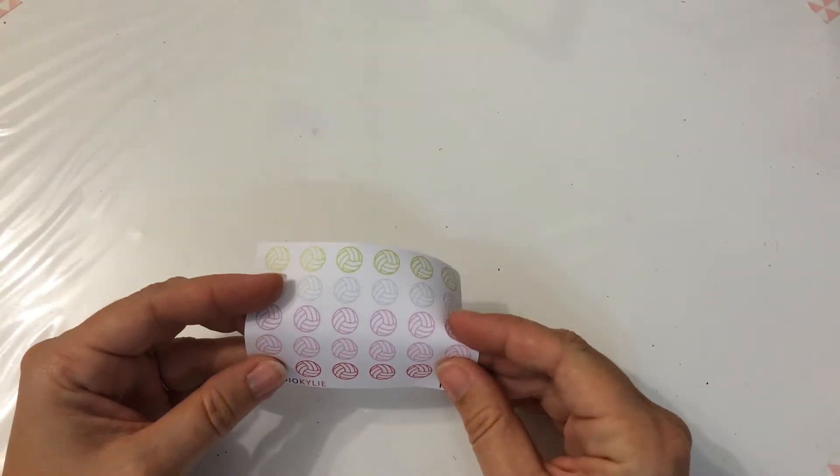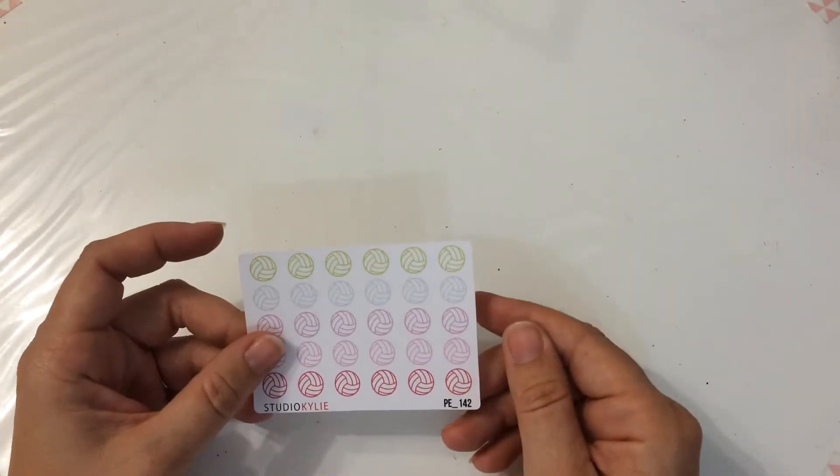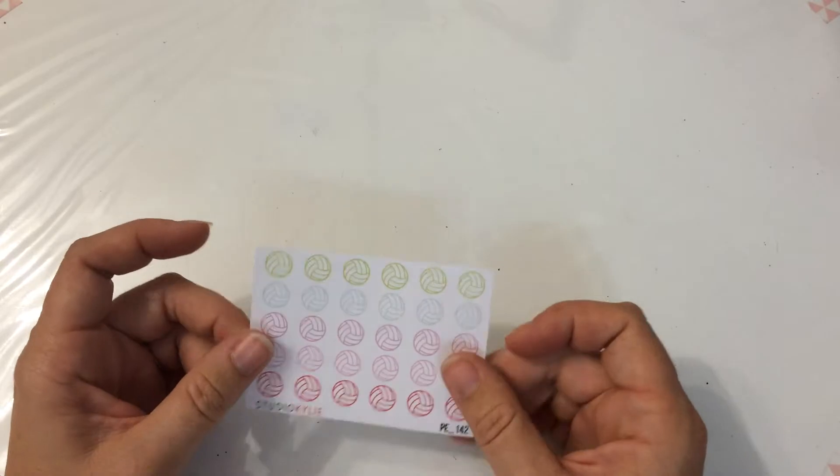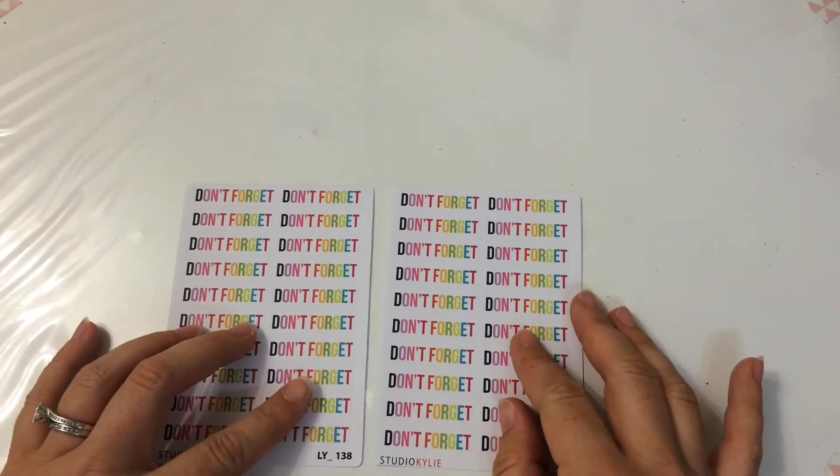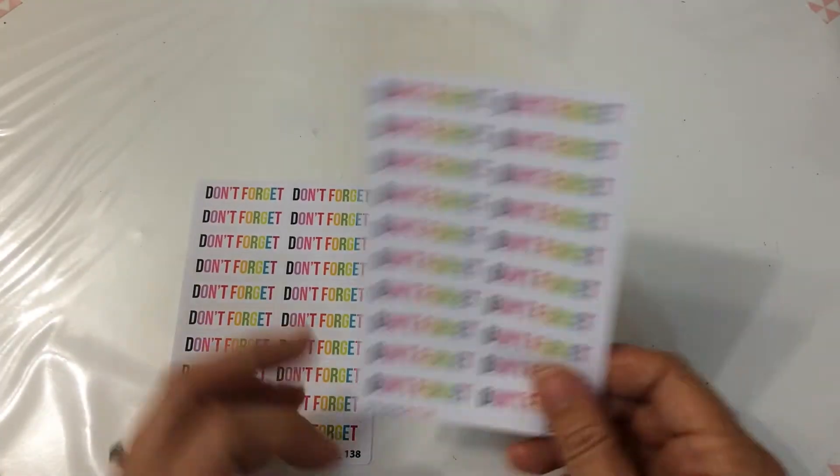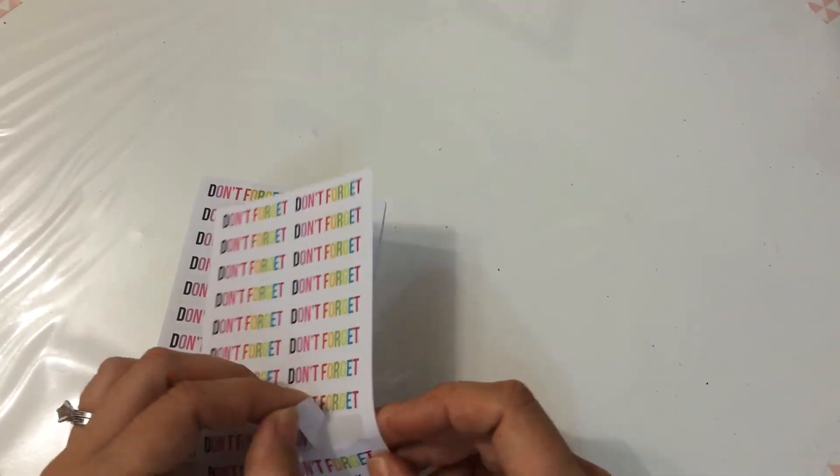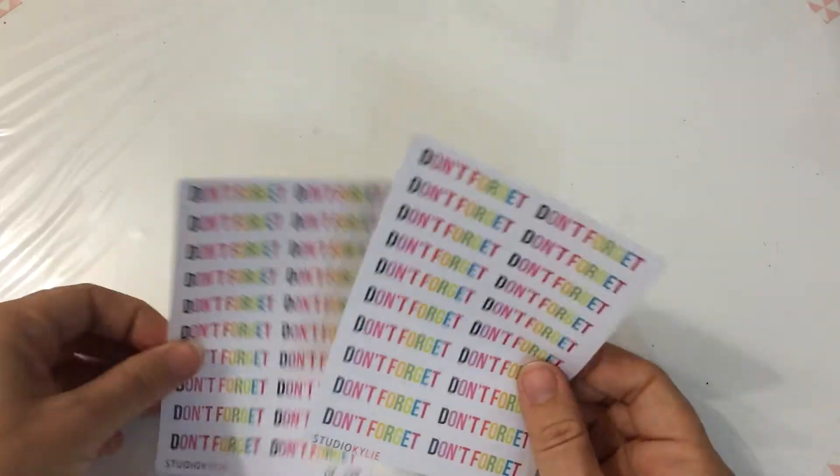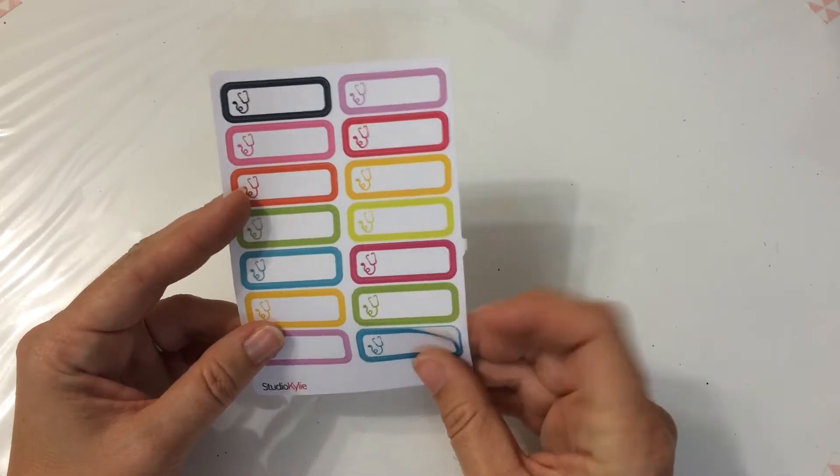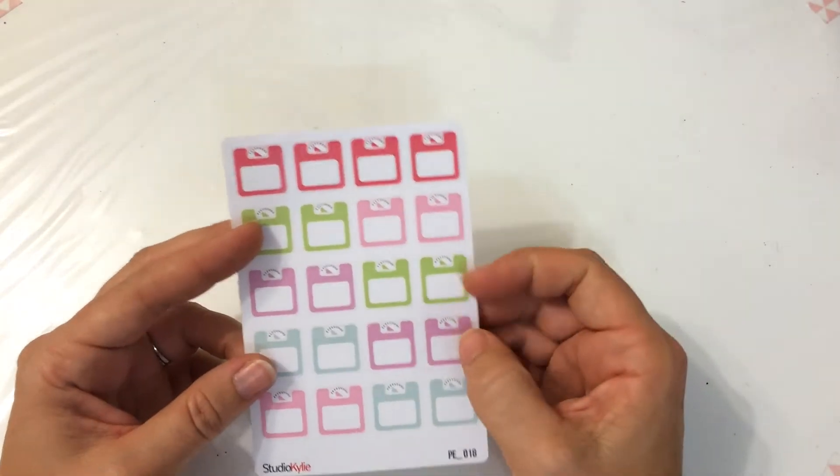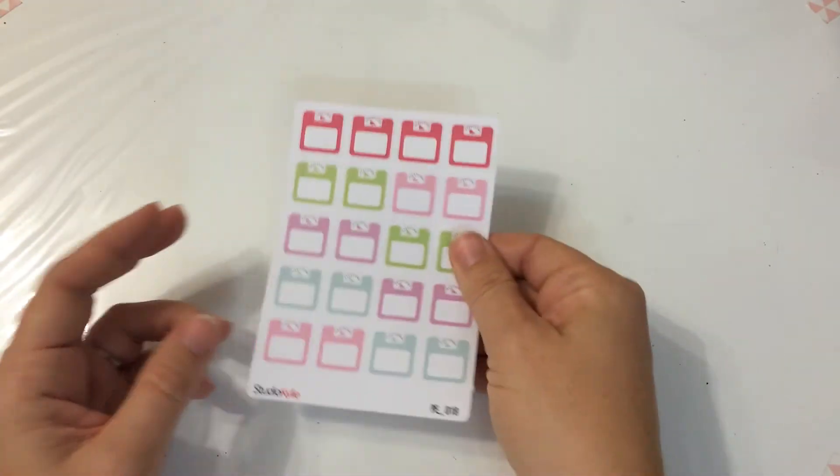These netballs I won't be using either. I don't play sport. These don't forget stickers, I will use. They're really cute in the rainbow color. Appointment labels with a little doctor stethoscope. I'll be using those. Scales. I use scales every week. Some quarter box appointment labels. I'll be using those.